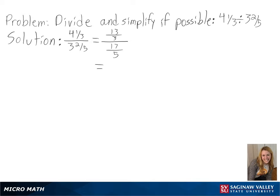Now we are able to change the second fraction to its reciprocal, since dividing two fractions is the same as multiplying by the reciprocal. Multiplying these out, we get 65 over 51.